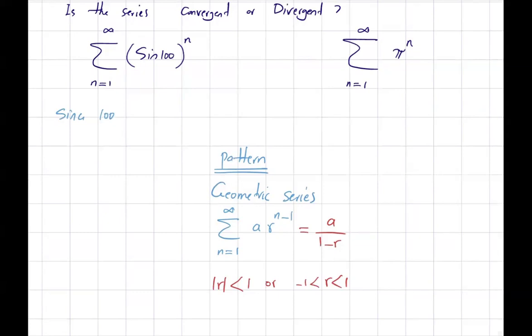Sine of 100 is a number. If you use a calculator, sine of 100 is approximately negative 0.51. So basically you can rewrite this series as a geometric series. So the summation of sine of 100 to power n, n starts from 1 goes to infinity, is a geometric series.